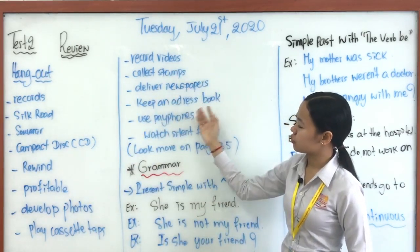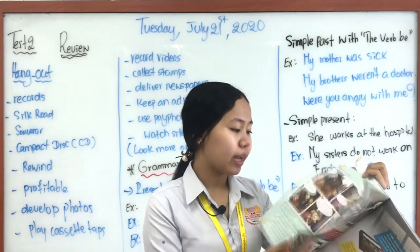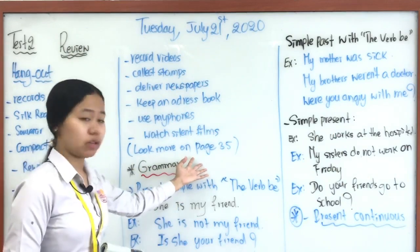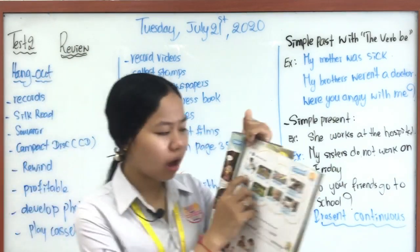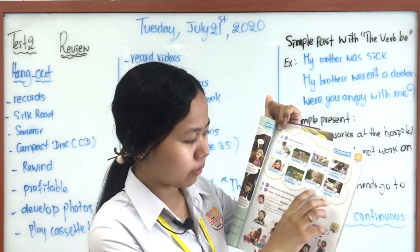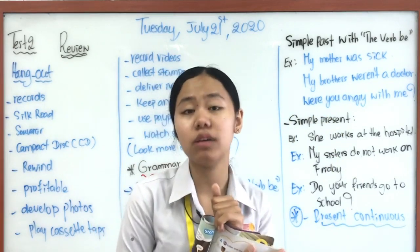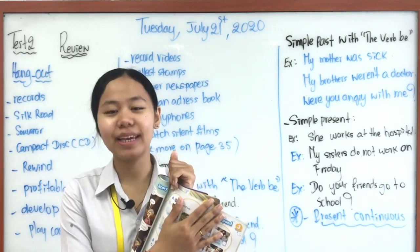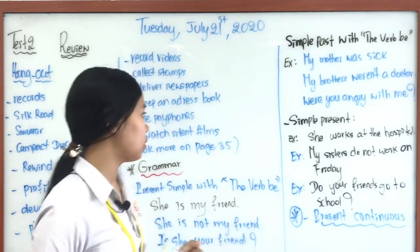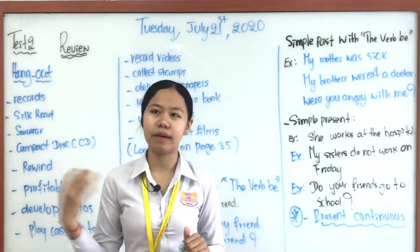Also review: 'collect stamps,' 'deliver newspaper,' 'keep an address book,' 'use payphone,' 'watch silent film.' You can also look at more words on page 35, like 'crawl,' 'fall down,' 'take naps,' 'baby sister,' 'toy,' 'catch butterfly,' 'cry loud,' or 'fish with your sibling.' You are going to see a mix of these words during your test, so try to remember them.